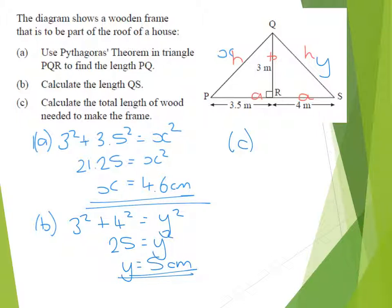Part C then, the total length of wood. So we've got to add together all the sides. So I've got X is 4.6, Y is 5. Then along the bottom I've got 3.5 and 4, and up the middle there is 3. So adding them all together,